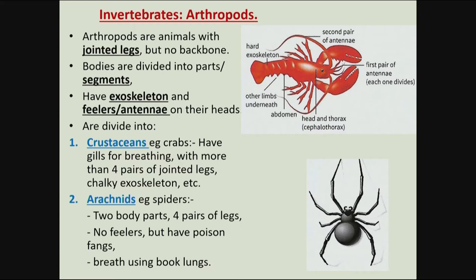Arthropods are invertebrates with jointed limbs or jointed legs — you can see joints if you look at a spider or a prawn. Their bodies are divided into parts, otherwise referred to as segments. They have an external skeleton, also referred to as an exoskeleton. When they grow and become bigger than the exoskeleton, they shed it out in a process referred to as molting.